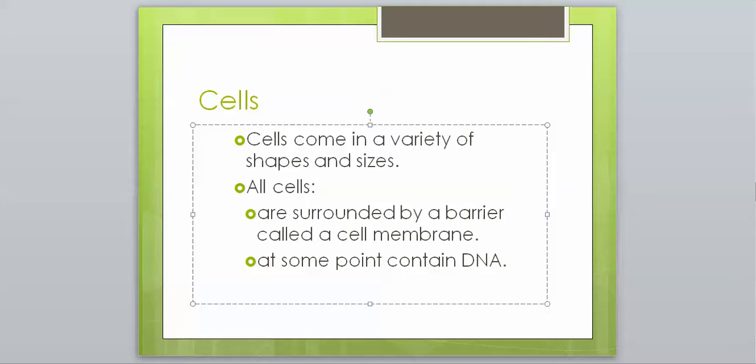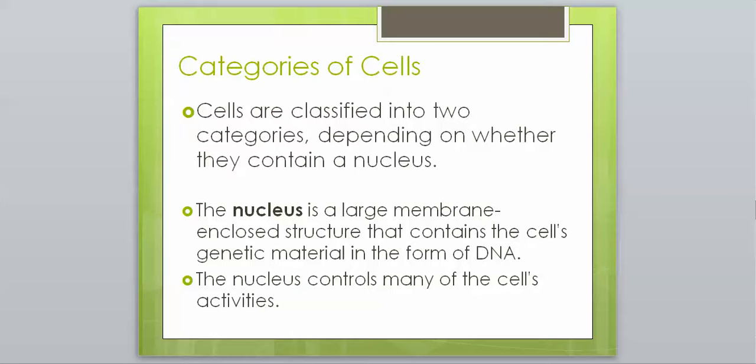No matter what, a cell, if you want to be a cell, you have to have DNA. You have to have a cell membrane. Those are pretty much the only two characteristics that are shared amongst all cells. And that is because we have categories of cells.